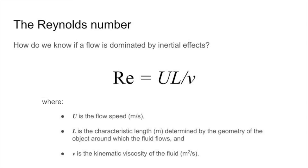In this equation, u is the speed of flow given in meters per second, l is the characteristic length in meters, and nu is the given kinematic viscosity of the fluid in meters squared per second.